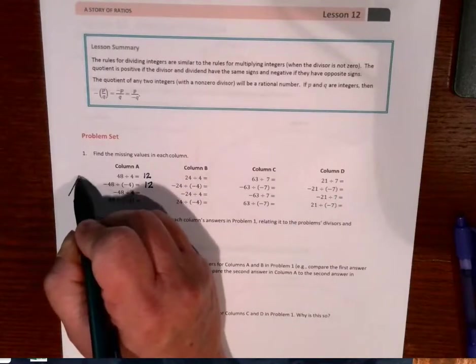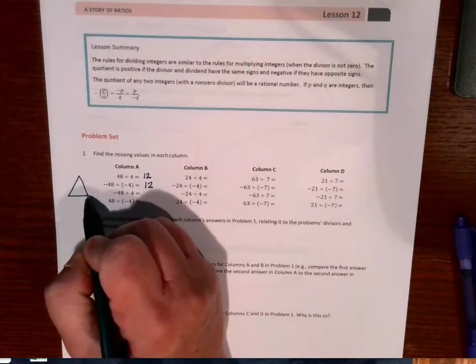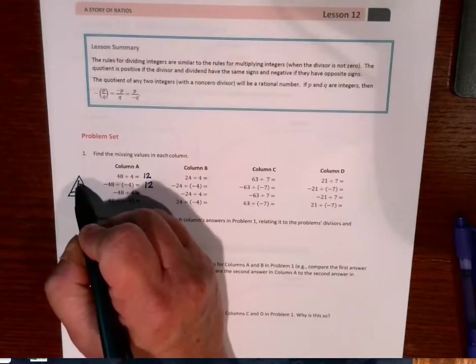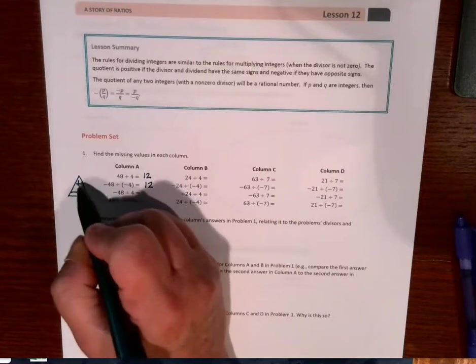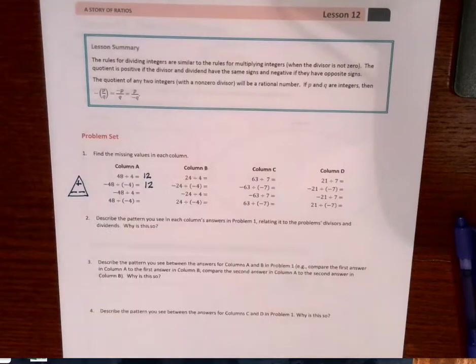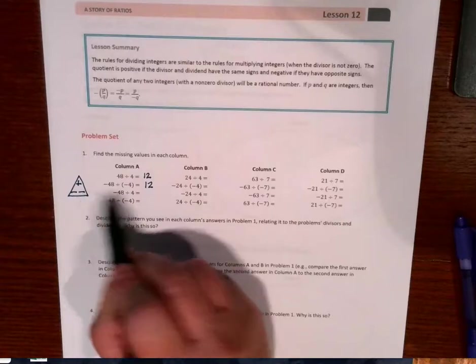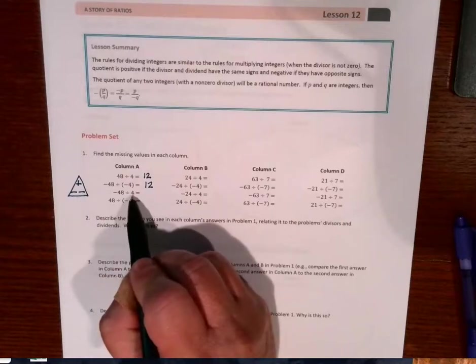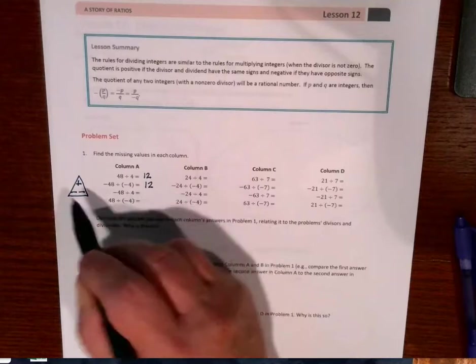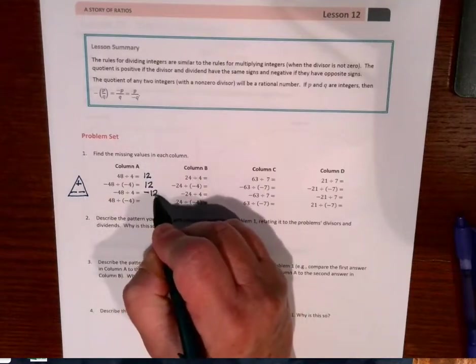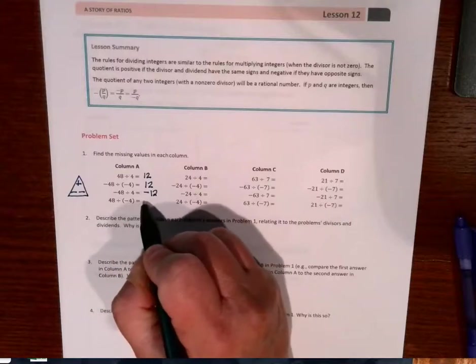I'm going to add my triangle because I know that any time I see a negative sign, just one negative sign, I have to use this triangle. I have negative 48 divided by positive 4, so my answer has to be a negative. Same thing here.